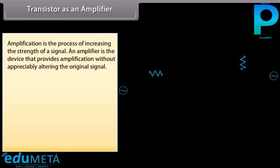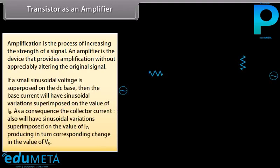Transistor as an amplifier: amplification is the process of increasing the strength of a signal. An amplifier is a device that provides amplification without appreciably altering the original signal. We consider the operating point of the transistor somewhere in the middle of the active region. The DC voltage VCE = VCC − IC·RC would remain constant. The operating values of VCE and IB determine the operating point of the amplifier. If a small sinusoidal voltage is superposed on the DC base bias, the base current will have sinusoidal variations superimposed on IB.